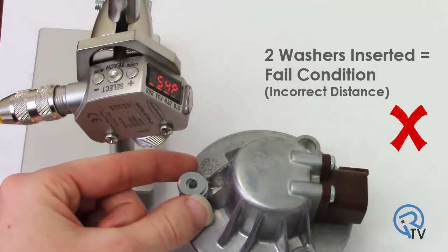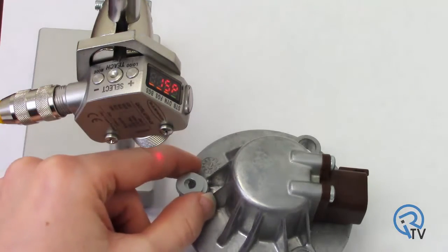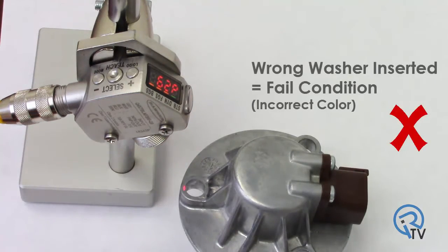If two washers are present, the sensor will trigger a fail condition. If the wrong color washer is present, the sensor will also trigger a fail condition.